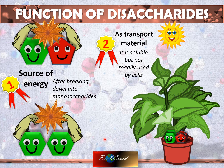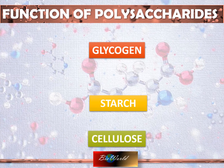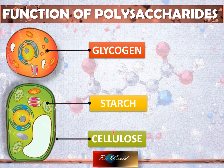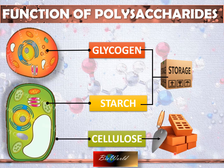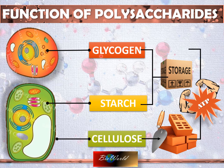Let's move on to the roles of polysaccharides. Glycogen, starch, and cellulose can be found in animal cells and plant cells. Glycogen can be found in tiny granules in the cytoplasm of animal cells, whereas starch can be found in the chloroplast or even in tiny vacuoles in the cytoplasm. Cellulose is found in the cell wall of plant cells. Both glycogen and starch function as storage material in animal and plant cells, whereas cellulose serves as a building material to construct the wall of the plant cell. However, all three can be a very rich source of energy.